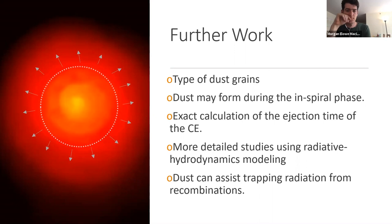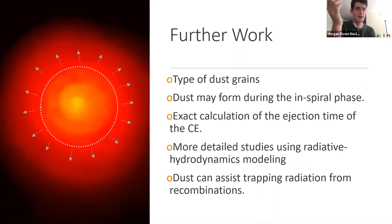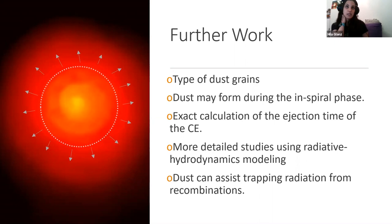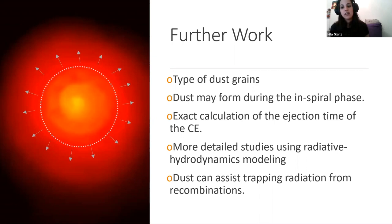We have time for about one last question, from Paul Green: do we know how much mass the main-sequence companion might accrete in that process, and is it tracked in your simulations? In this simulation we didn't account for accretion because we tried it and it was a very low ratio compared to the companion's mass, so we cancelled it to have better resolution. I'm not sure I can answer that now, but I do have some past results and we can discuss this later.